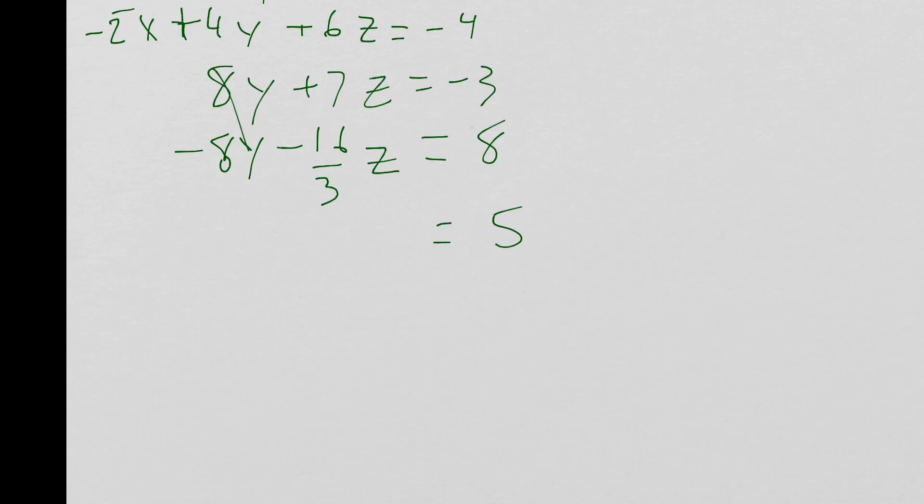I just go ahead and put this in my calculator. I just put 7 minus 16 thirds, and I get 1 and 2 thirds. If I hit the math fraction button, it tells me that that's 5 thirds. So I push math and then fraction, it turns it into a fraction. So now I know that 5 thirds times z equals 5.